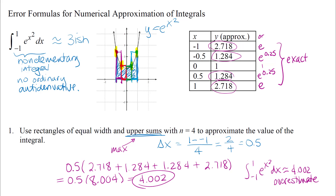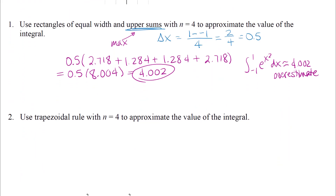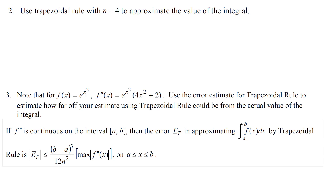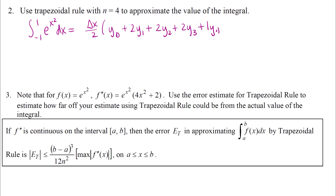Next we'll look at the trapezoidal rule and Simpson's rule, and focus on using the error approximation formulas for those two. For the trapezoidal rule with n equals four, you either memorize the formula or think about areas of trapezoids. You've got delta x over two, then your y-values with one times each of the ones on the ends and two times all of the ones in the middle.